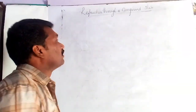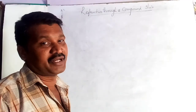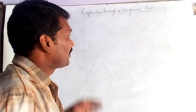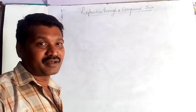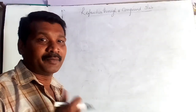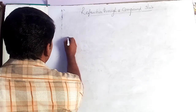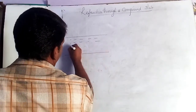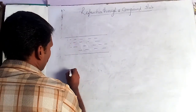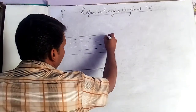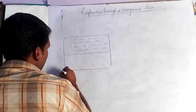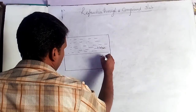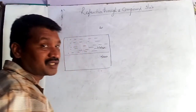Refraction through a compound slab. We are considering three mediums: air and another two mediums such as water and glass. We consider these three kinds of different mediums and compare the refractive indices between them. Consider the water surface over the glass slab. So there are three kinds of mediums: air, water, and glass.